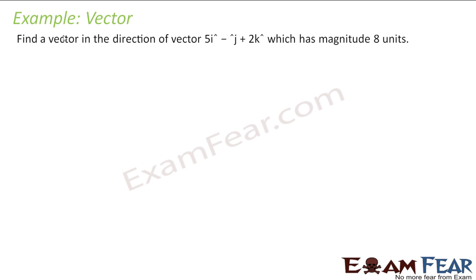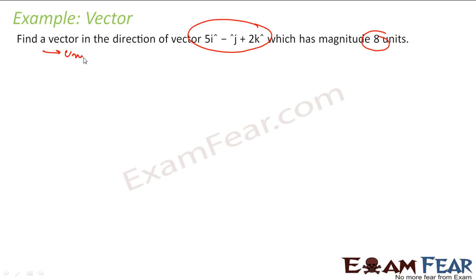We have to find a vector in the direction of this vector which has magnitude of 8 units. We have to find a vector which is in this direction but magnitude of 8 units. So what I can do is, I can find a unit vector in this direction, and then I can multiply with 8. I will get the answer.